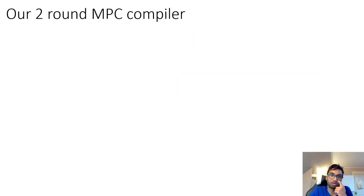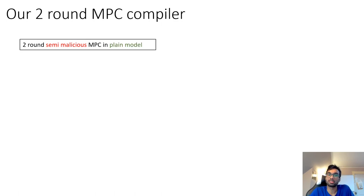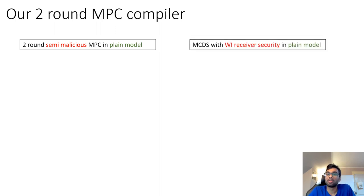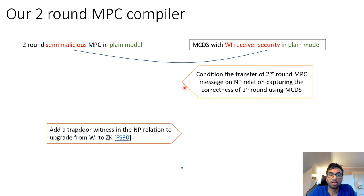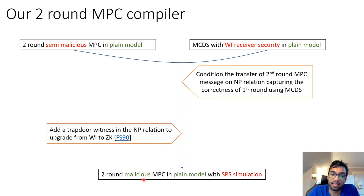Our final two-round MPC compiler combines existing two-round semi-maliciously secure MPC protocols in the plain model with the MCDS primitive we construct, conditioning the transfer of second-round MPC messages on an NP relation capturing correctness of the first-round MPC message. We then add a trapdoor witness to the NP relation to upgrade from WI-style hiding to zero-knowledge-style hiding, finally achieving a two-round maliciously secure MPC protocol in the plain model with SPS simulation.